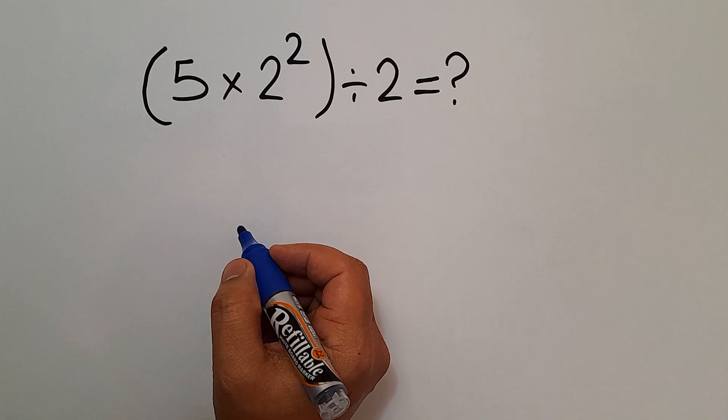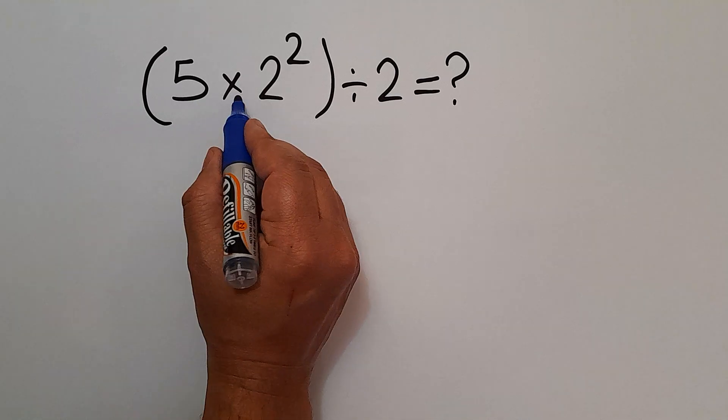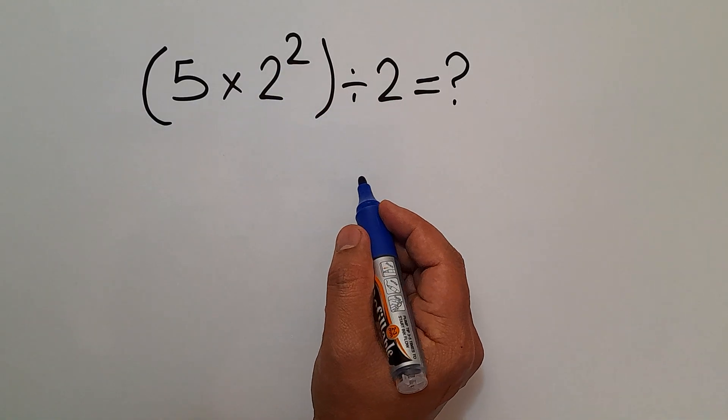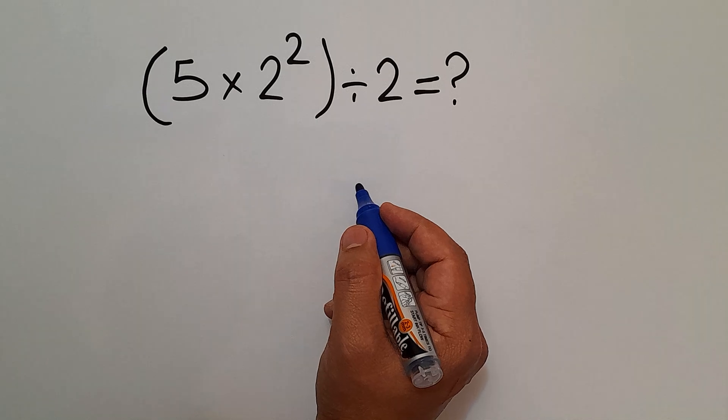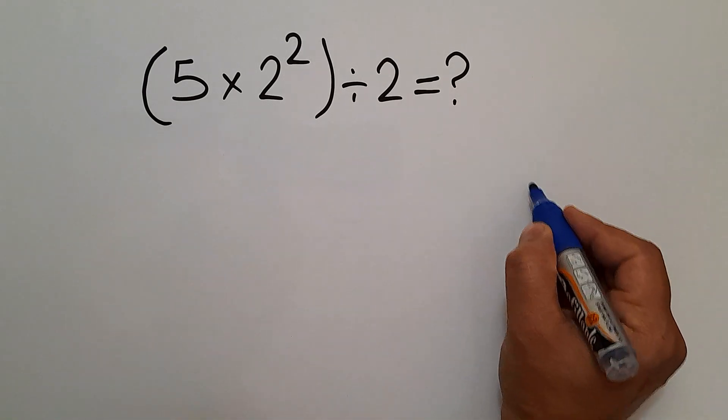Hey guys and welcome to this video. In this video we want to calculate this expression: five times two squared, then divided by two. Are you ready to solve? Let's go ahead and get started. According to the order of operations, which is PEMDAS...